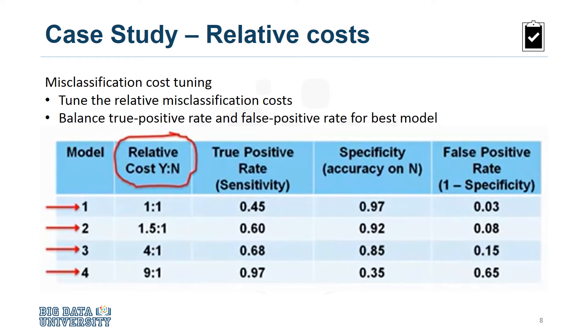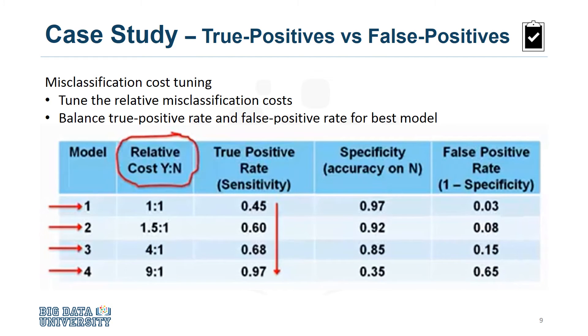Each value of this model building parameter increases the true positive rate, or sensitivity, of the accuracy in predicting yes, at the expense of lower accuracy in predicting no, that is, an increasing false positive rate. The question then becomes, which model is best, based on tuning this parameter?